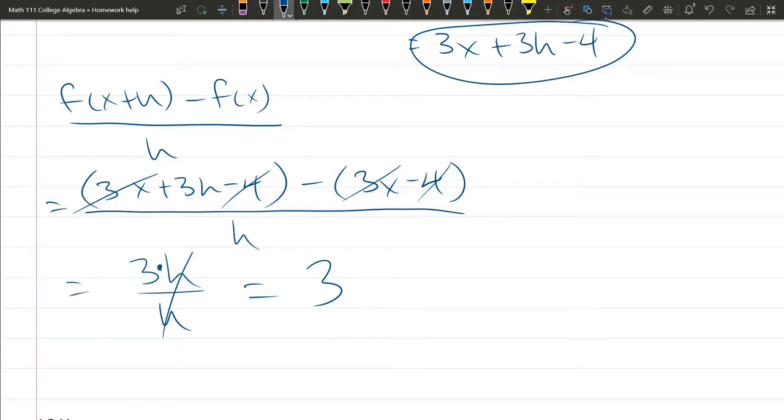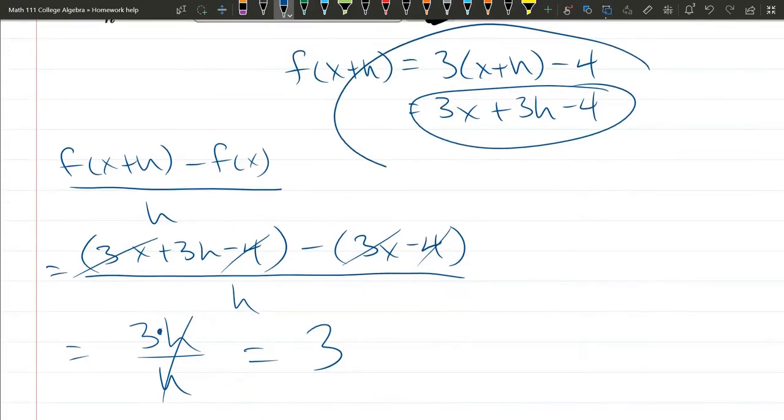If you do a quadratic, there's some more terms, and it doesn't simplify so nicely. But a quadratic works in a similar way. You just have to make sure on this step, if it was squared, that you FOIL it out. So just keep that in mind.